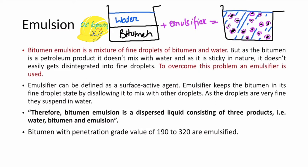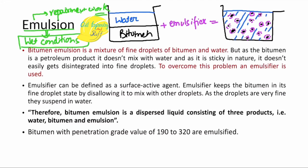Emulsion helps with repairment work. It can be used in wet conditions where implementation of conventional bitumen is not possible, and is also used for maintenance work. Bitumen with penetration grade values of 192 to 320 are emulsified.